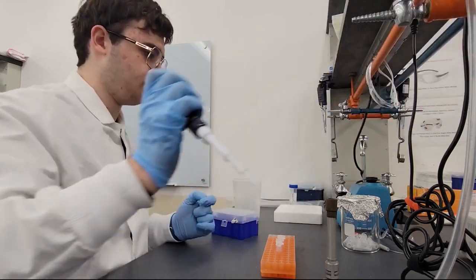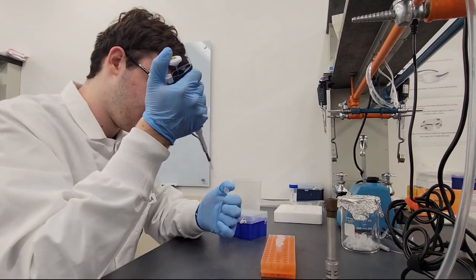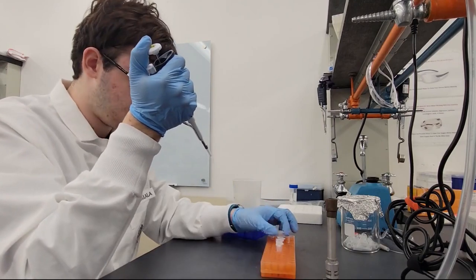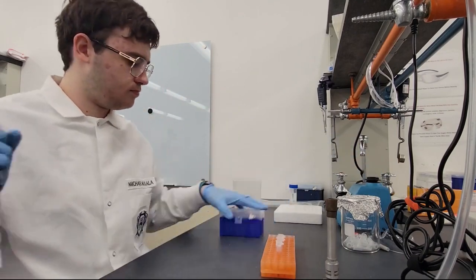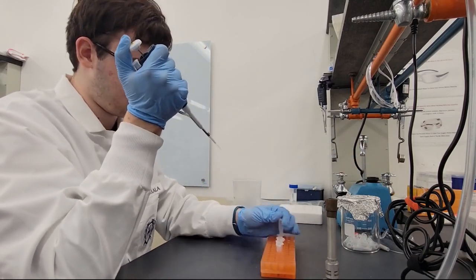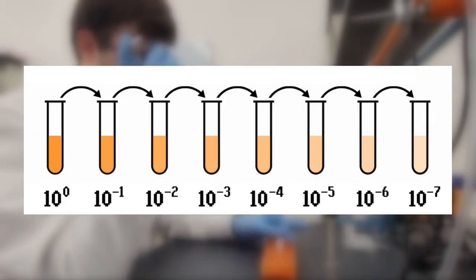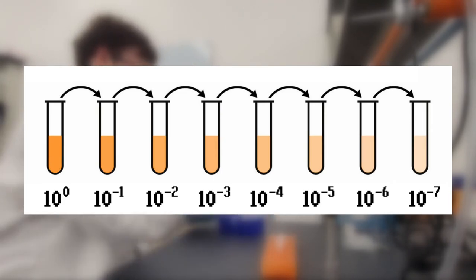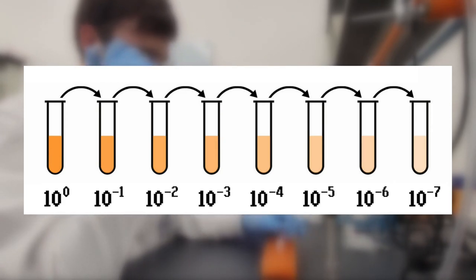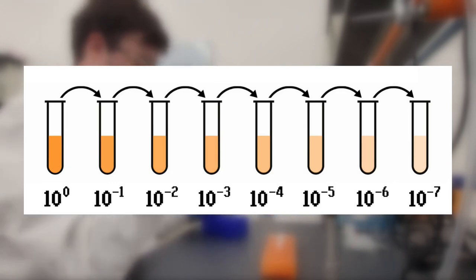We're going to swirl it around and do something fancy called a serial dilution. A serial dilution is essentially where you're going to be taking a sample that is 10 to the zero, which is one if you actually paid attention in math, and then slowly take a tenth of that. So 10 to the negative one. And a tenth of that. And a tenth of that. Basically making it smaller and smaller and smaller until we can hopefully isolate a single colony of phage.